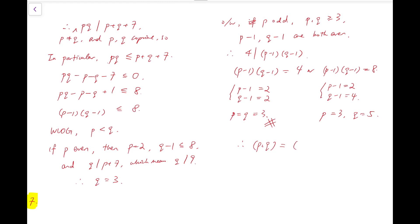So, all in all, we have these four pairs, which are 2, 3, 3, 2, 3, 5, and 5, 3.